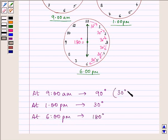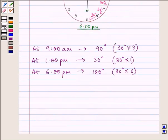To recap: 30 degrees moved three places gives 90 degrees; one place gives 30 degrees; six places gives 180 degrees. So our final answers are 90 degrees, 30 degrees, and 180 degrees.